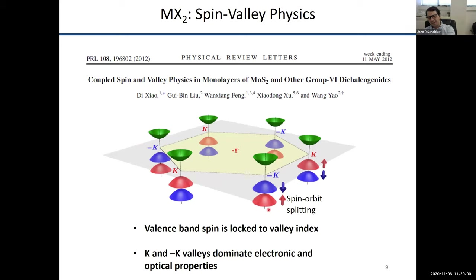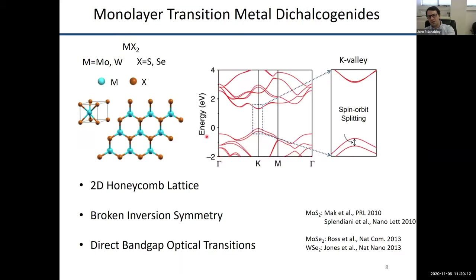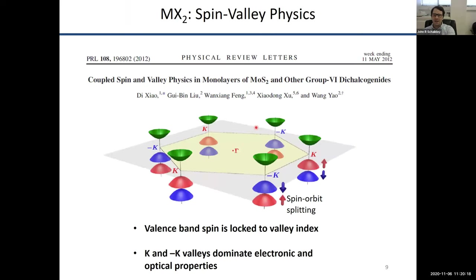The actual coupling between the spin and valley comes about because this is a two-dimensional depiction of the band structure. Instead of looking just towards plus K, if we look towards minus K, we see there's a direct optical gap at both plus K and minus K. This has threefold rotational symmetry, which is just a consequence of the crystal symmetry. So the plus K valleys are all equivalent, and similarly all three minus K valleys are equivalent.